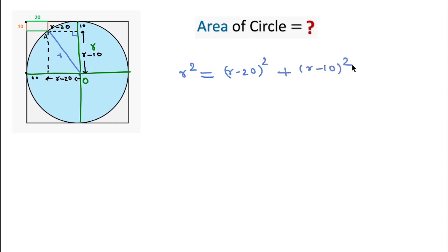If we solve this, then we can write R squared plus 400 minus 40R plus R squared plus 100 minus 20R. We can write 2R squared plus 500 minus 60R, and here is R squared. We can write R squared minus 60R plus 500 equals 0. This is a quadratic equation.